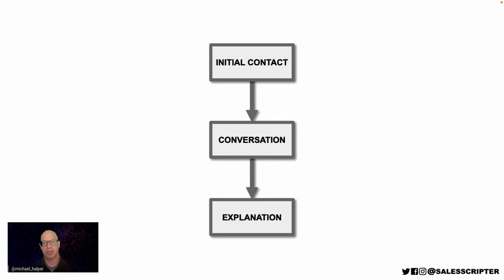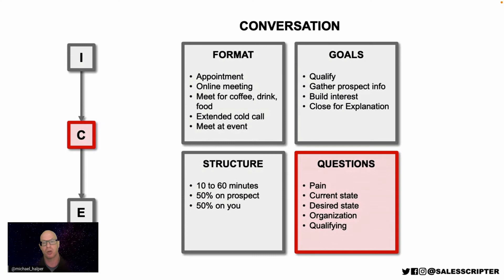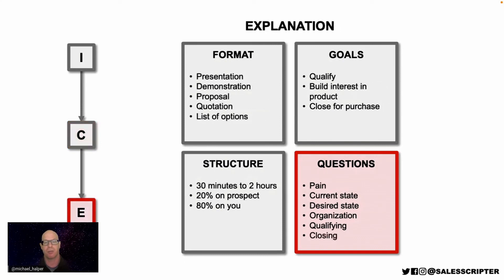Going back to the sales process: in the initial contact you pre-qualify to determine if it makes sense to talk. Then you progress to the conversation — the second step in the ICE sales process — where you start doing the real qualifying. You can ask any of the four categories of deep qualifying questions, and also any pain or current state questions you didn't get to ask yet. The conversation step is where you really dig deeper to figure out how much time to spend with this prospect and how likely they are to purchase.